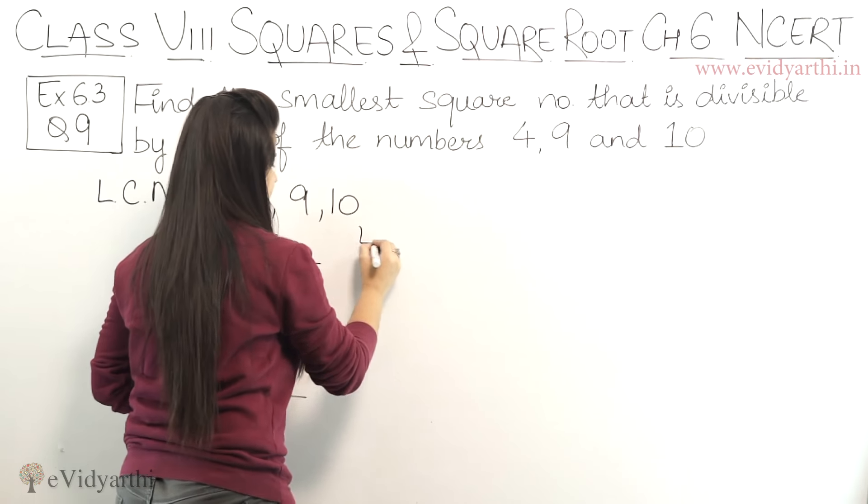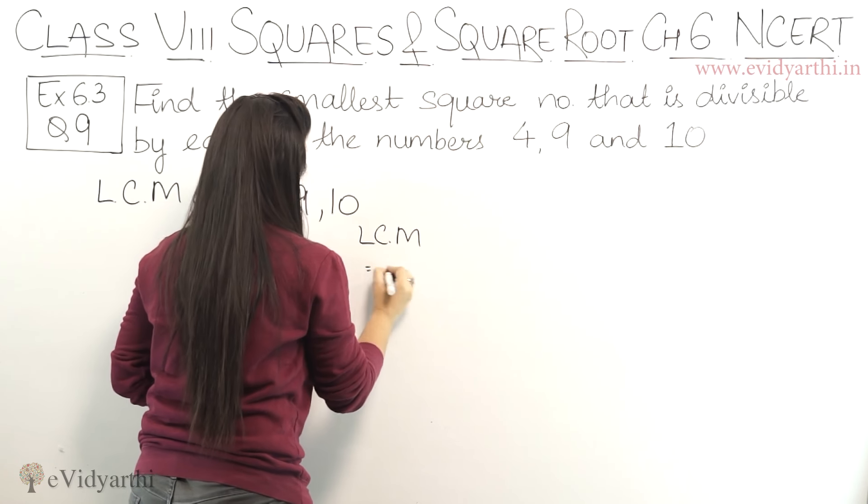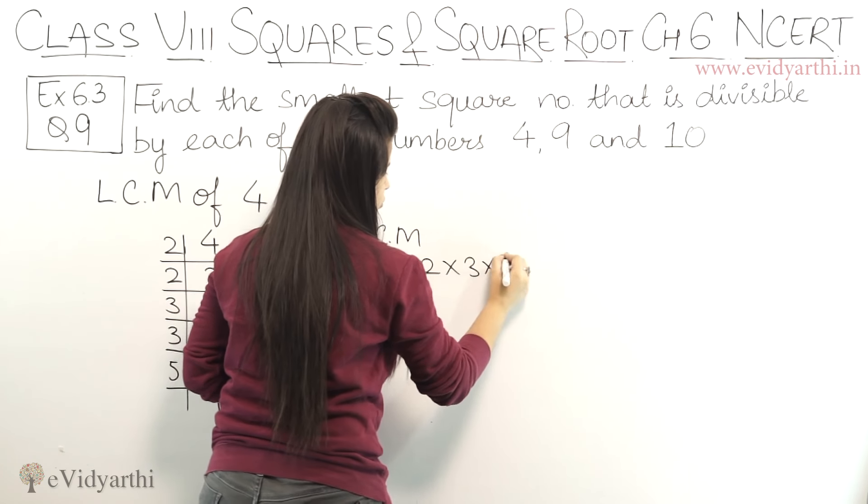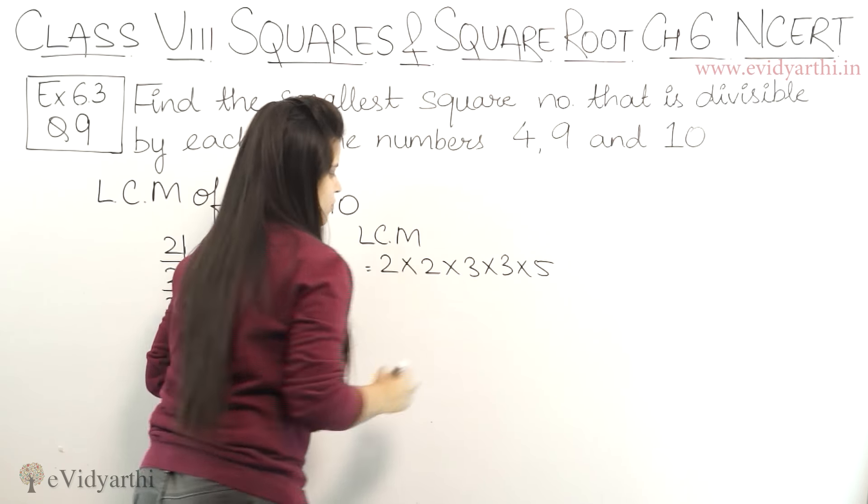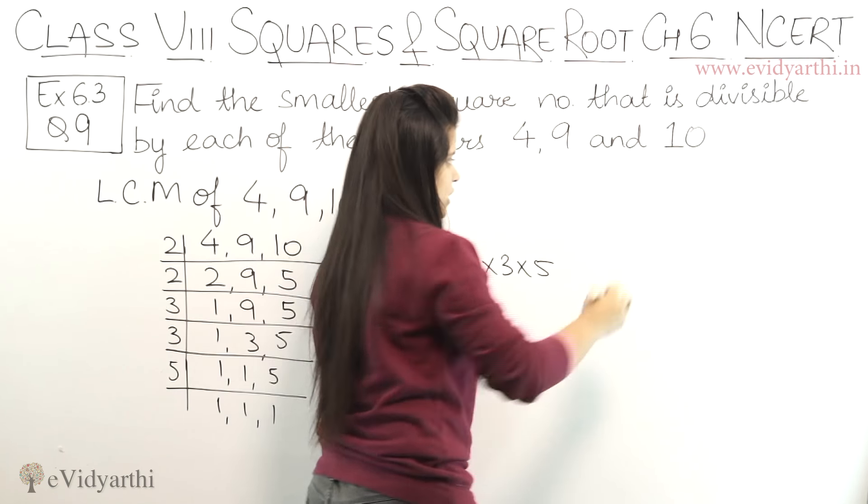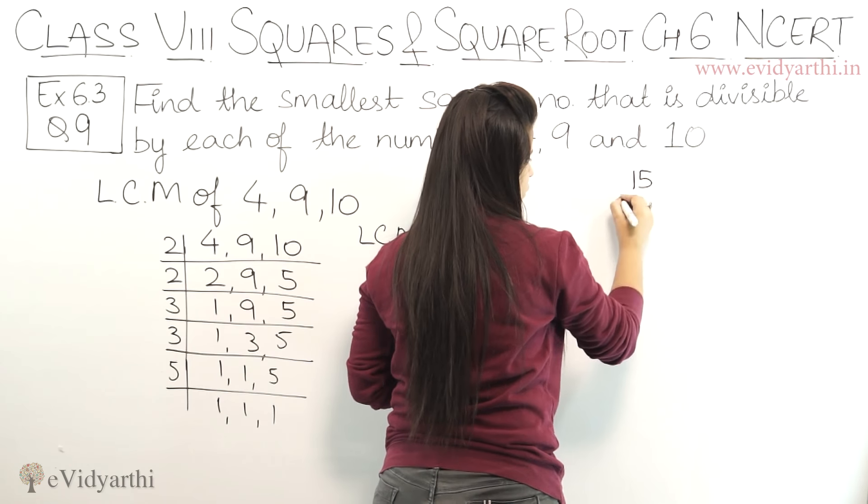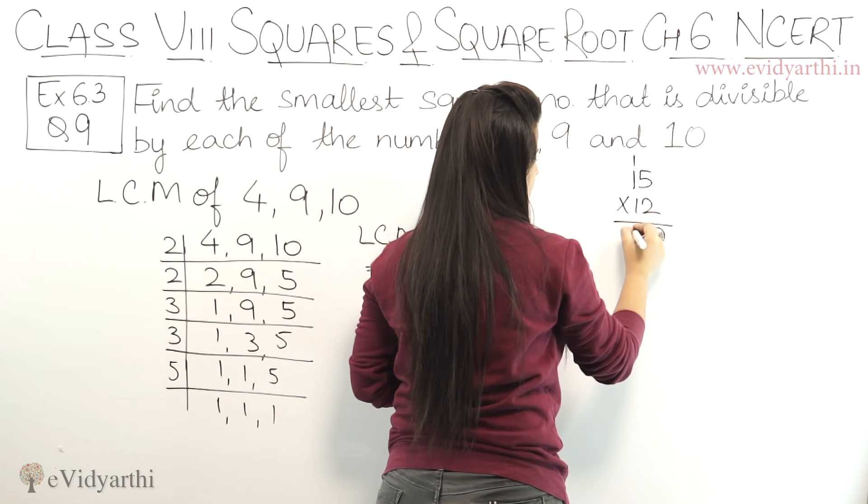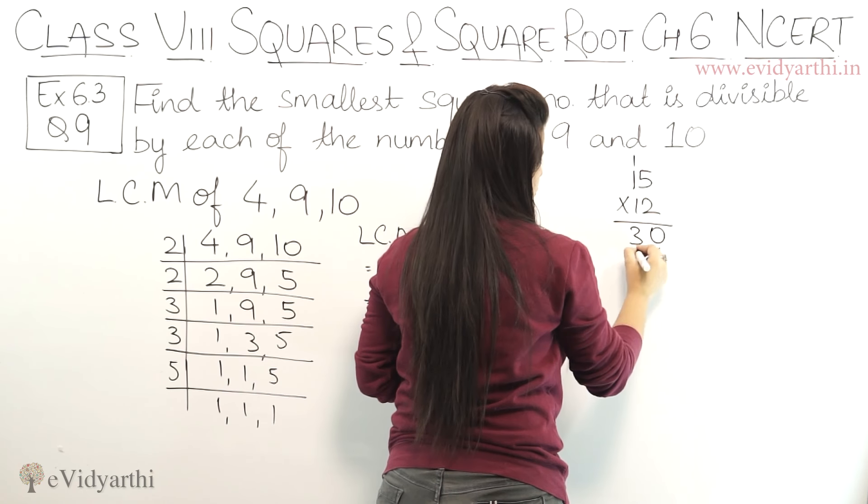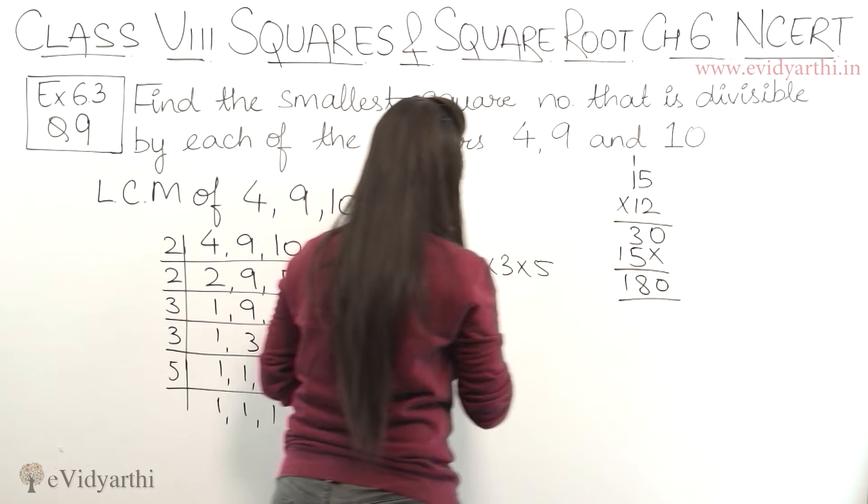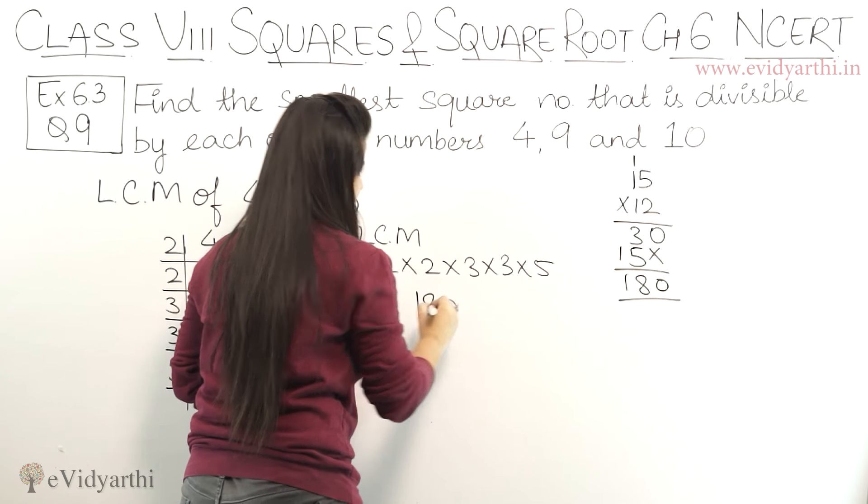So now let's write the LCM of this. This will be 2 into 2 into 3 into 3 into 5. So let's multiply. 2, 2 is 4. 4, 3 is 12. 5, 3 is 15. So 15 into 12. 5, 2 is 10. 2, 1 is 2 plus 1, 3. 1, 5. 1, 1 is 1. So this is 0, 8, 1. So we have LCM as 180.